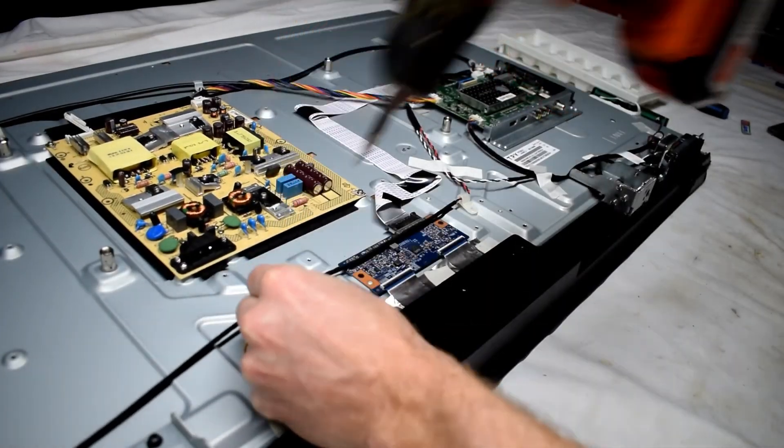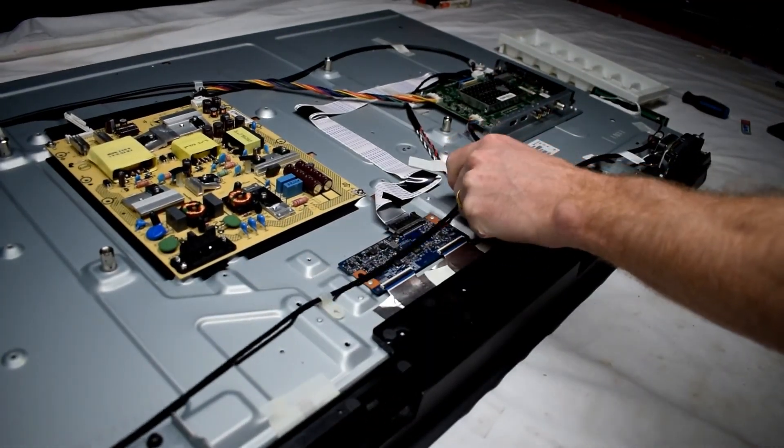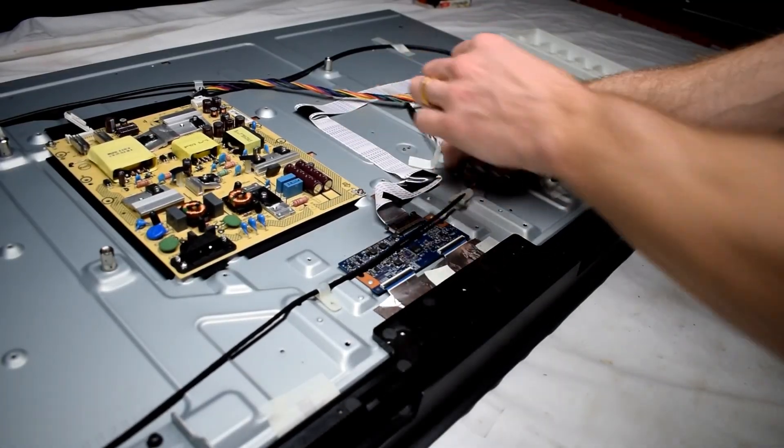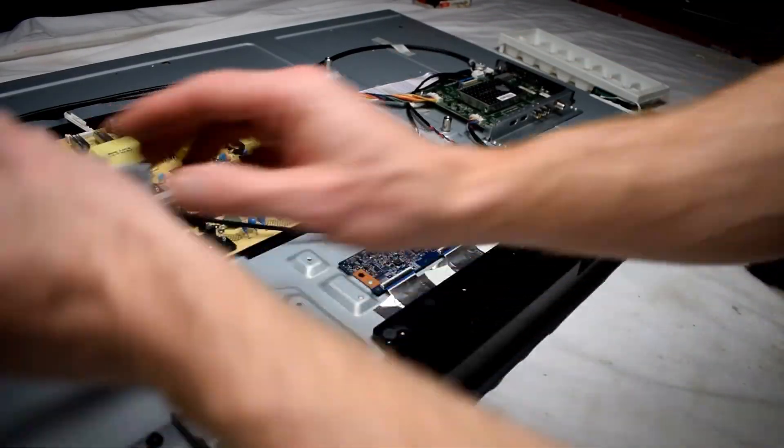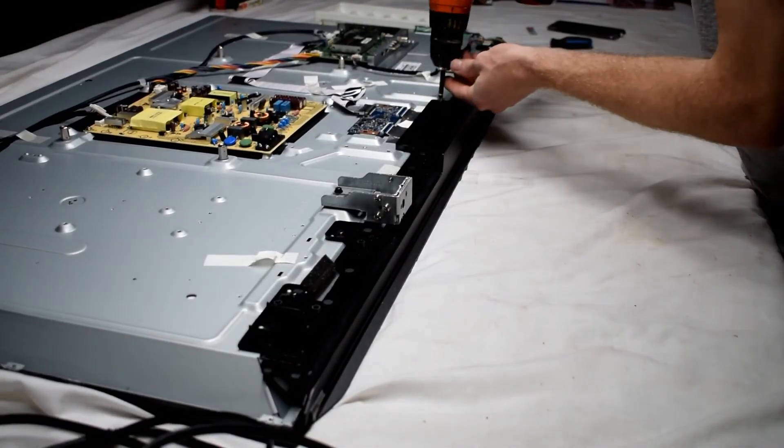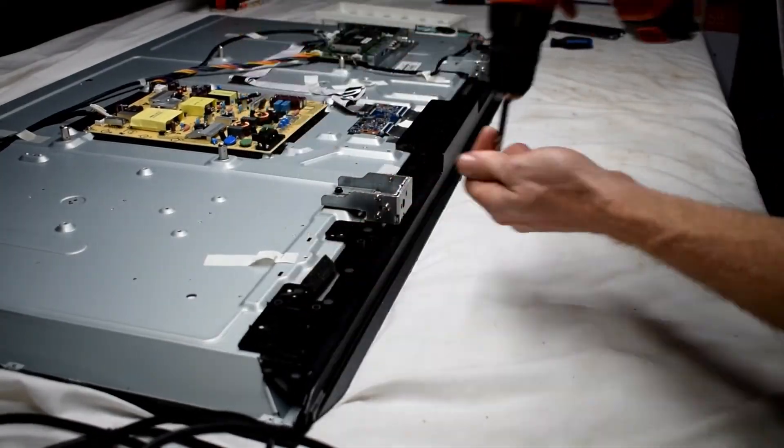Now, just remove the speakers, put some tape, remove the connector that connects to the speakers, and remove the plastic bottom panel.